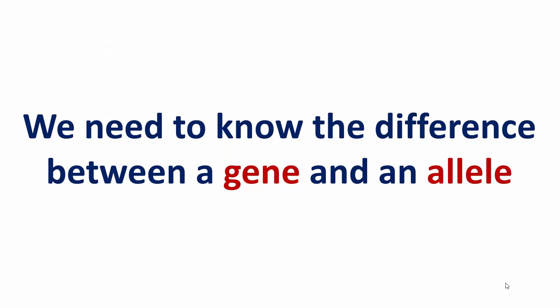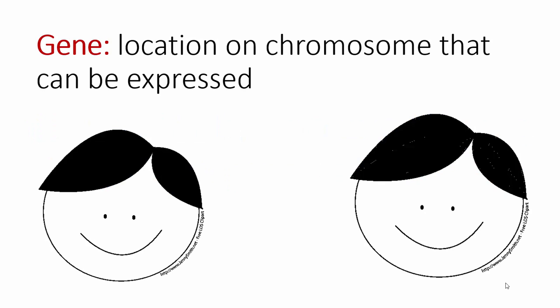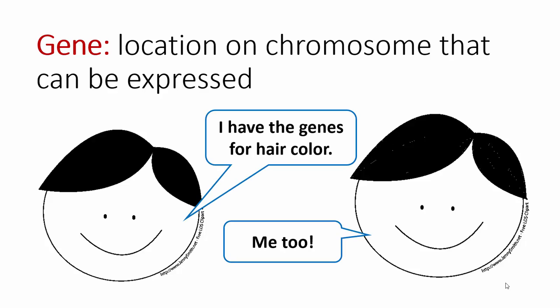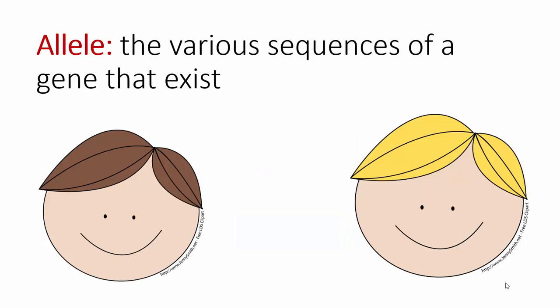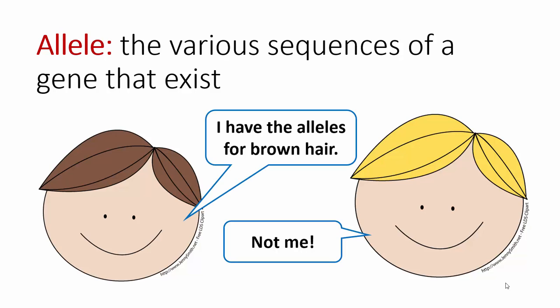Before we go on, we should differentiate the definitions of a gene and an allele. A gene is simply a location on a chromosome — a part of the DNA that can be expressed. All humans are going to share the same genes; for example, we're all going to have genes for hair color. An allele, on the other hand, is actually the DNA sequence — it is the version of the gene that you have. So you might have brown hair from a brown hair allele, or blonde hair from blonde hair alleles. We all have different alleles, unless you're identical twins.